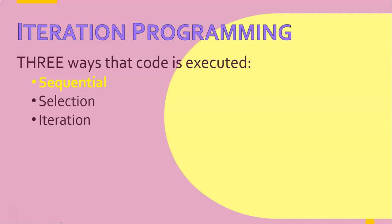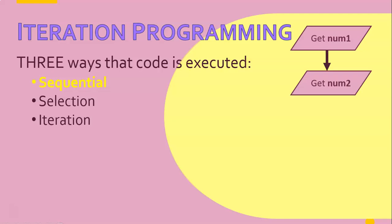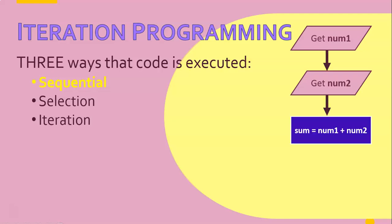Let's just recap that quickly. Sequential programming is basically the word sequence - the code is run in a particular sequence, the way that you write it. If you've got a line of code, then a second line, then a third line, it will execute in the order that you give it. In that flowchart, you can see: first get num1, then get num2, then add them, then display them.